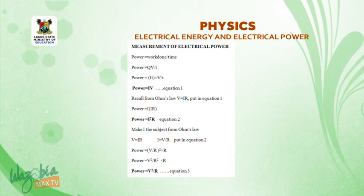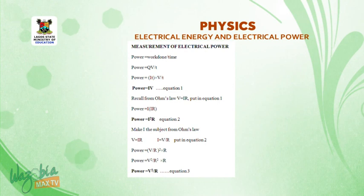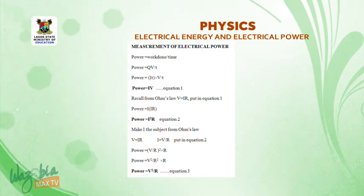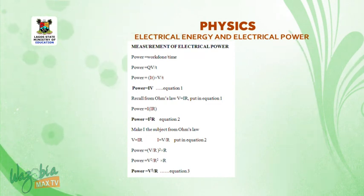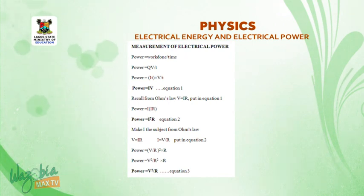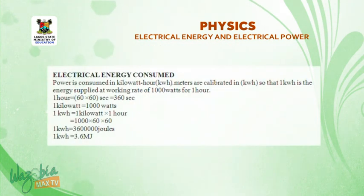Going back to Ohm's law, V = IR. Substituting into P = IV gives P = I²R — that is equation two. Making I the subject from Ohm's law: I = V/R. Substituting into equation two gives P = V²/R — that is equation three.